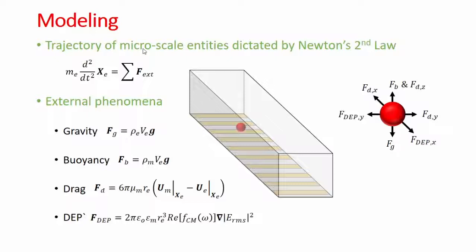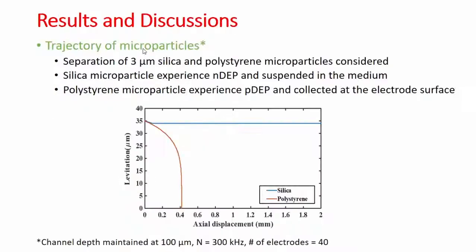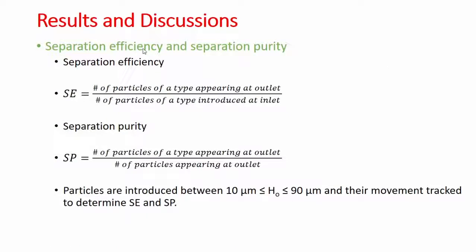We looked at the forces associated with the particles and performed a finite difference analysis of the model. For the simple case where two different types of particles start from the same location, you can see that the blue silica particle, which experiences negative DEP, levitates inside the channel. The red polystyrene particle is attracted towards the electrode. In this way, the two particles can be separated.